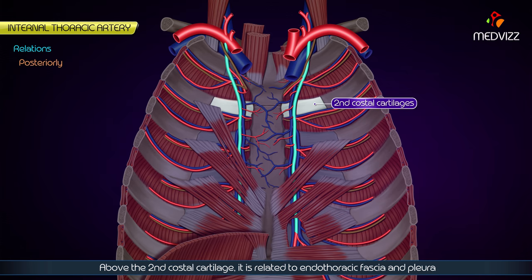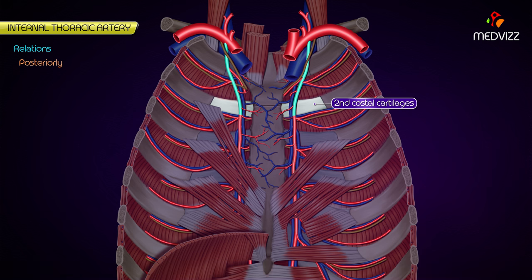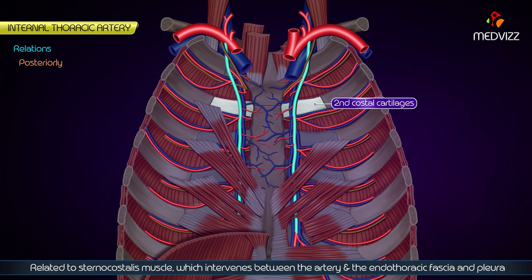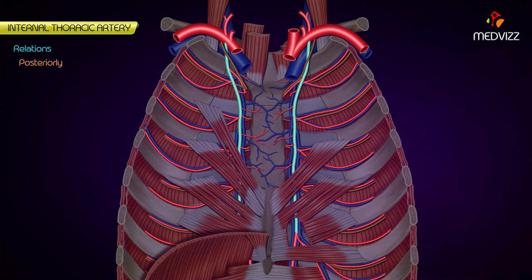Posteriorly, above the second costal cartilage, it is related to the endothoracic fascia and pleura. Below the second costal cartilage, it is related to the sternocostalis muscle, which intervenes between the artery and the endothoracic fascia and pleura.